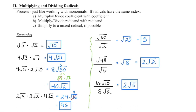The same process applies to division — we divide coefficients with coefficients and radicands with radicands. 1 divided by 1 is 1, and 50 divided by 2 is 25. Since 25 is a perfect square, we square root it and end up with a value of 5.